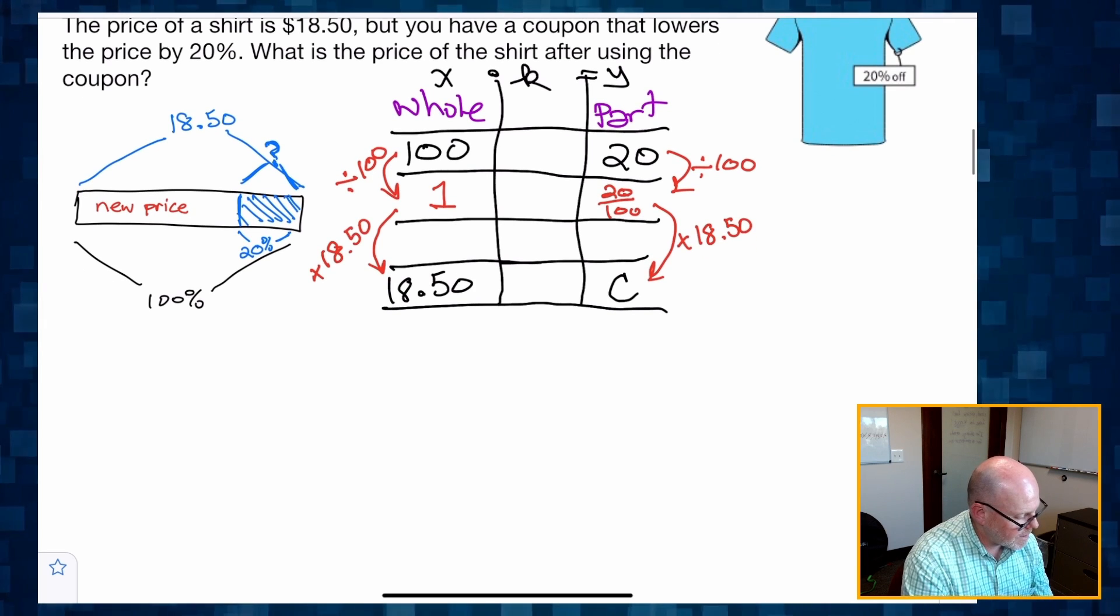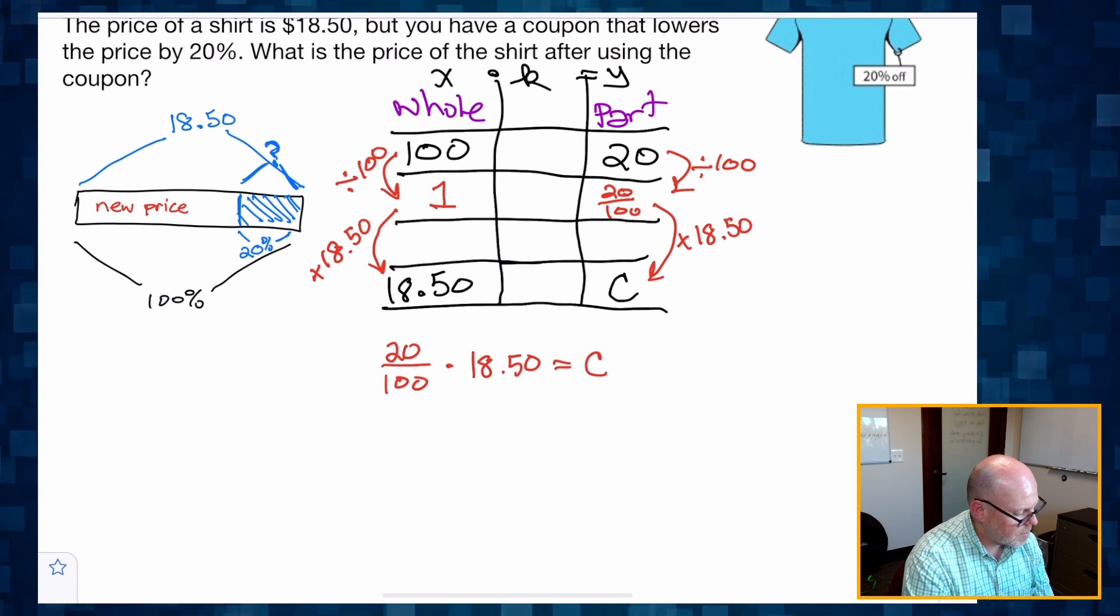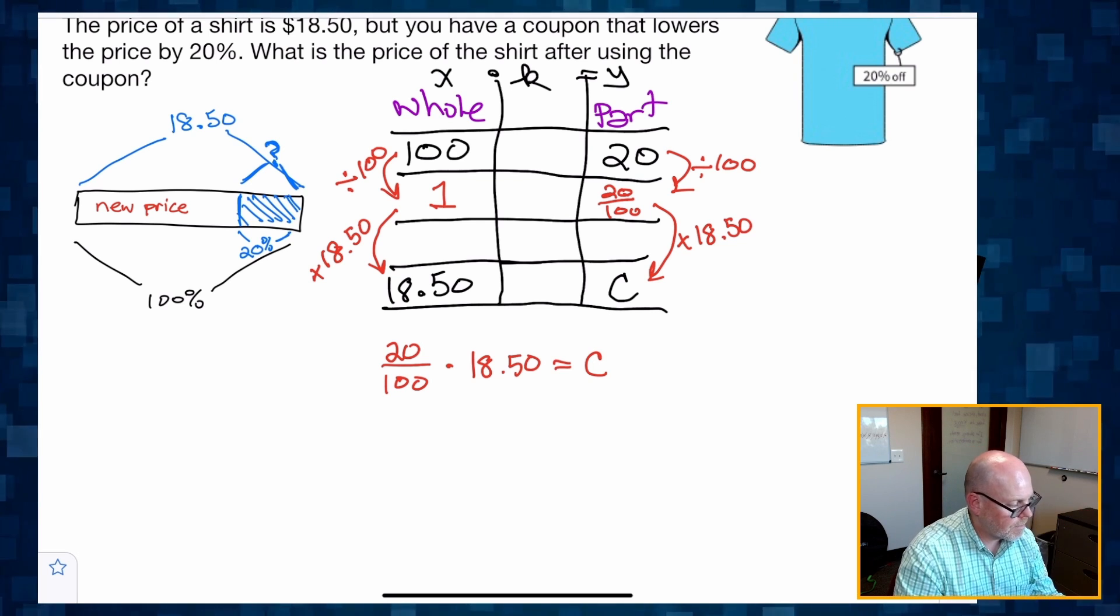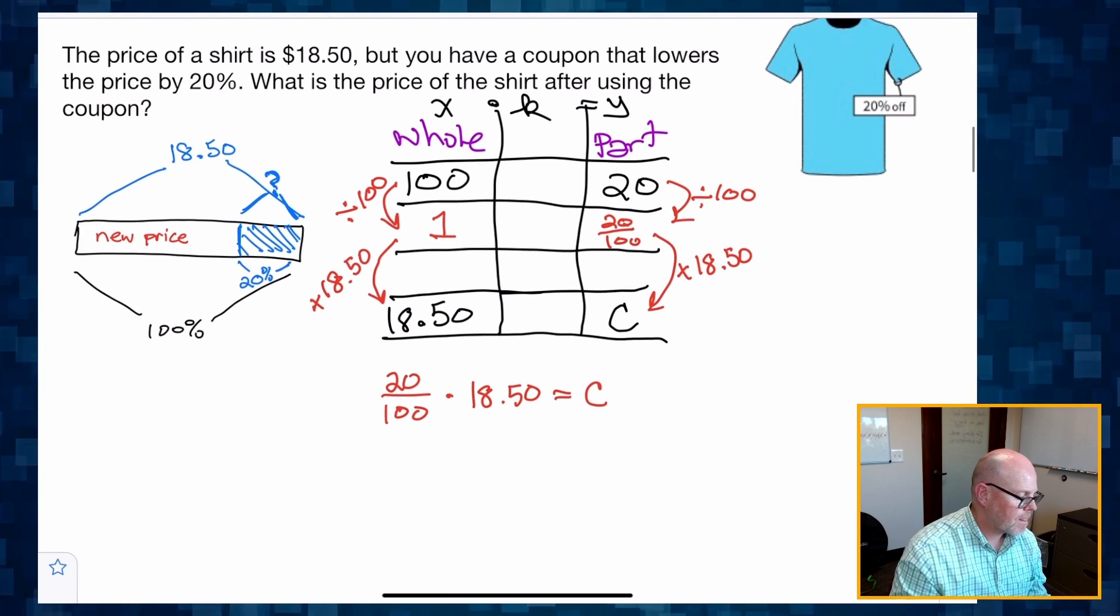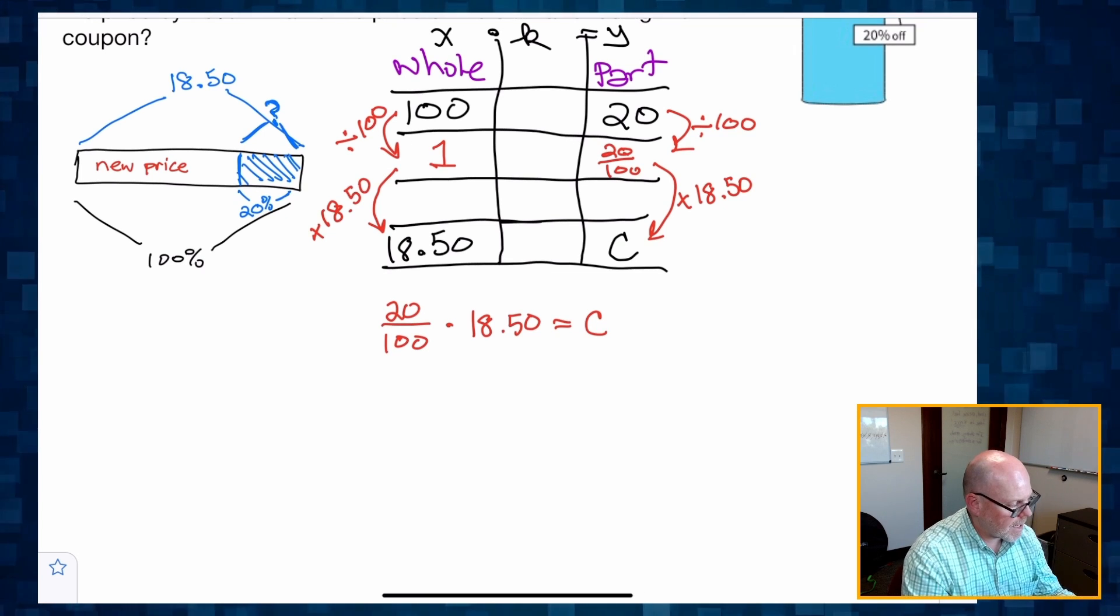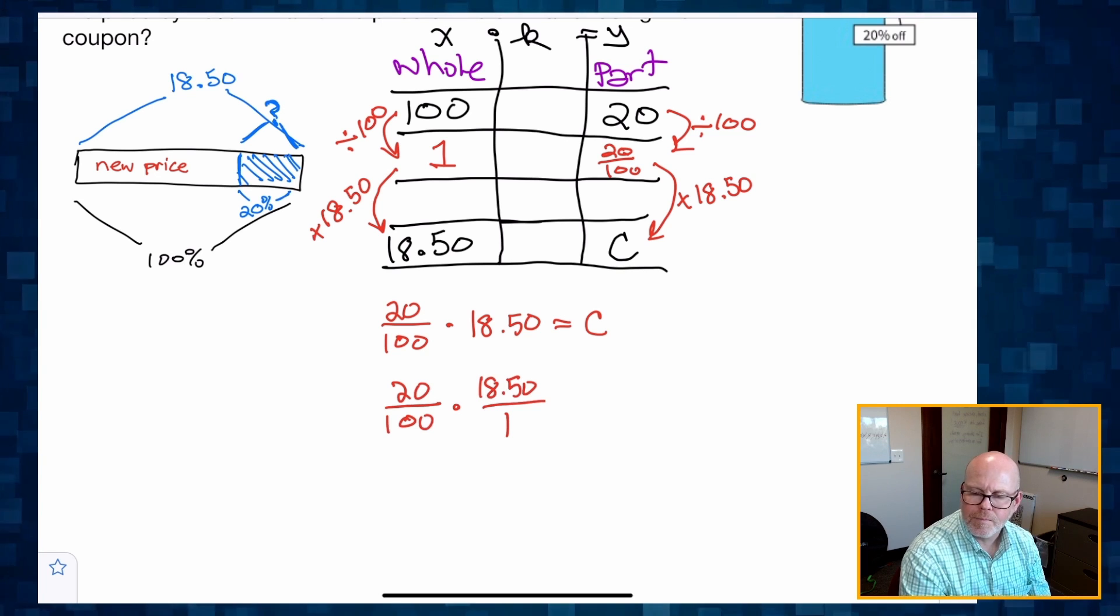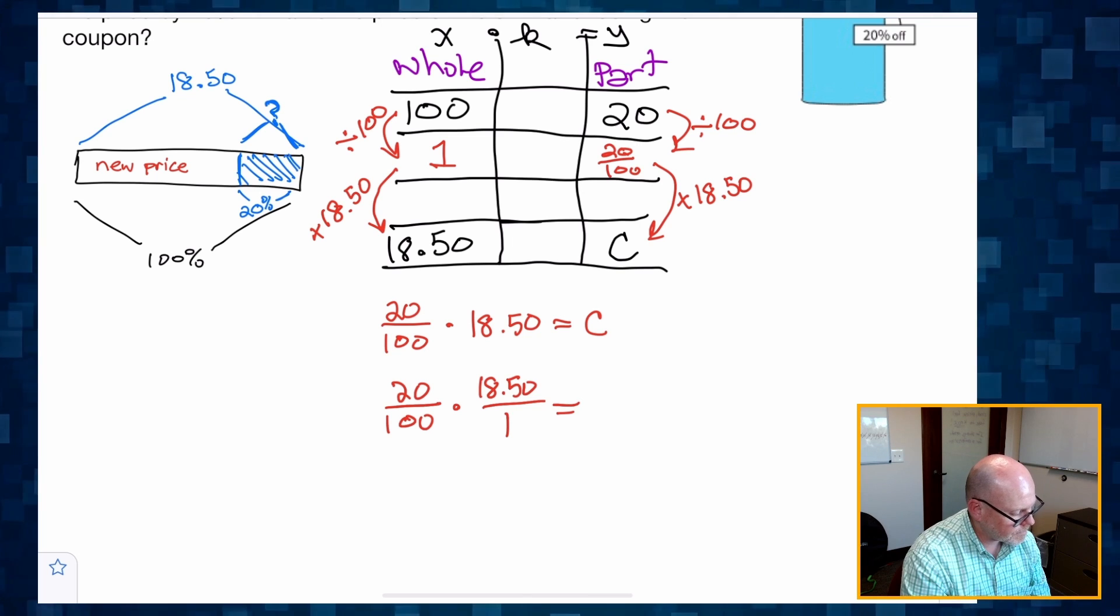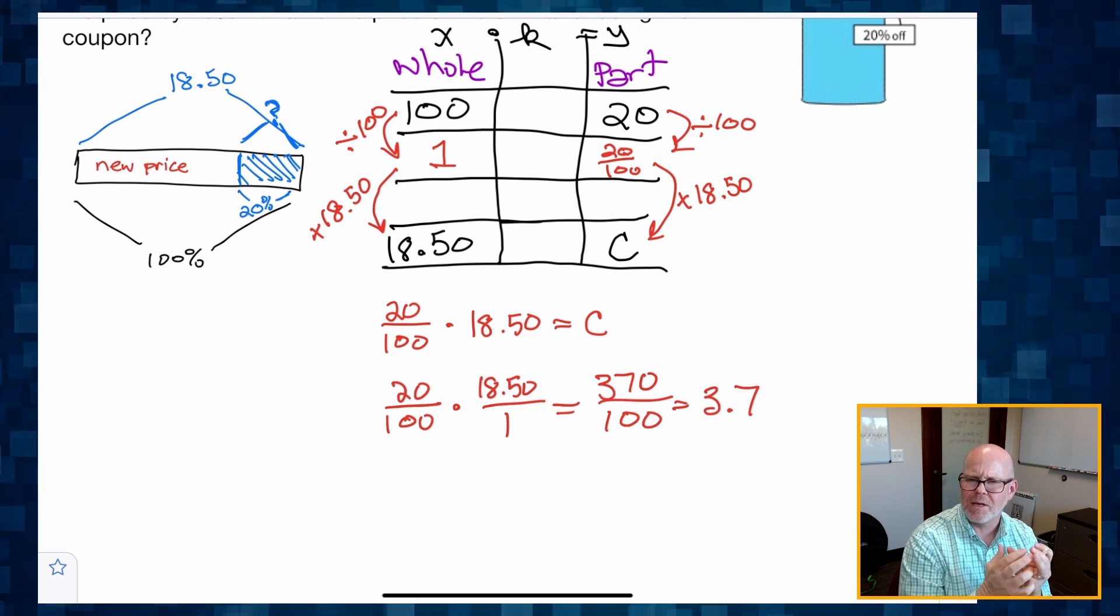And when I do that, what is that going to look like? Well, that's going to be 20 over 100 times 1850 gives me my new value, the coupon portion. Remember, that's going to give me this value right there, the amount that it got reduced by. So how do we multiply? That's going to be a little unorthodox because we're mixing fractions with decimals, but we can do it. We're not afraid. 20 times, and this is going to be 1850 over one. I can multiply straight across. And that gives me 370 over 100, which gives me 3.7.